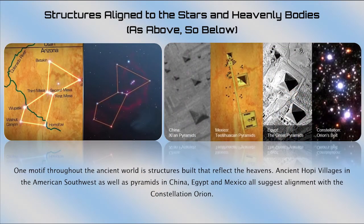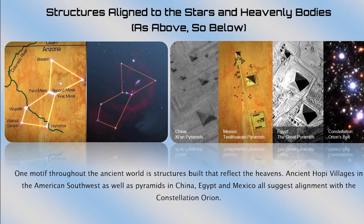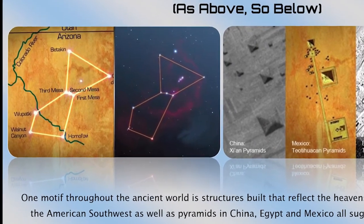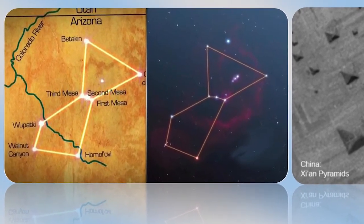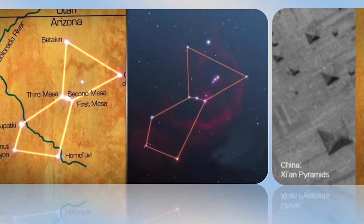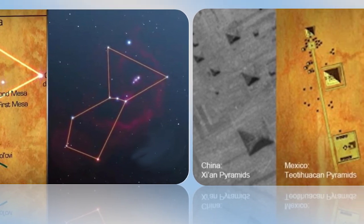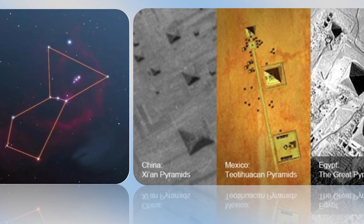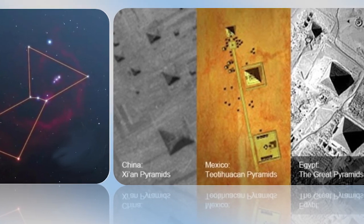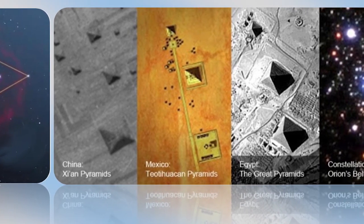So that's basically what the theory is. In this video, we're going to go over structures aligned to stars and heavenly bodies — as above, so below. One motif throughout the ancient world is structures built that reflect the heavens. Ancient Hopi villages in the American Southwest, as well as pyramids in China, Egypt, and Mexico, all suggest alignment with the constellation Orion.